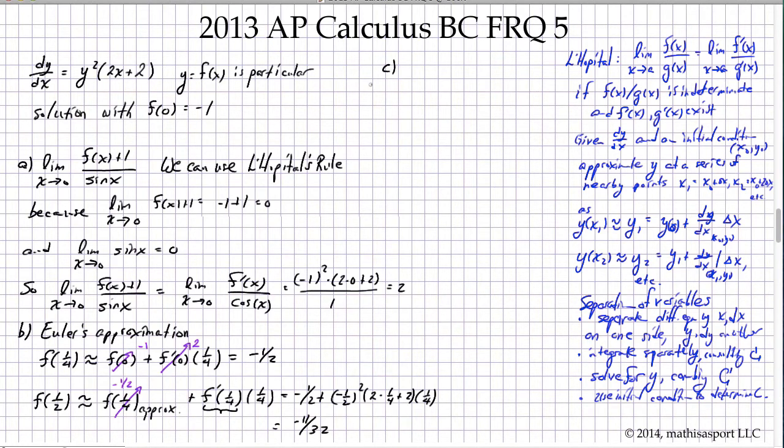In part c, we're going to be using separation of variables to solve. To apply the separation of variables method, we're going to say dy/dx equals y² times (2x + 2). We separate the factors: we get dy over y² and then we have 2x + 2 dx. The dy and y-related factors are on the left now, and the dx and x-related factors are on the right.